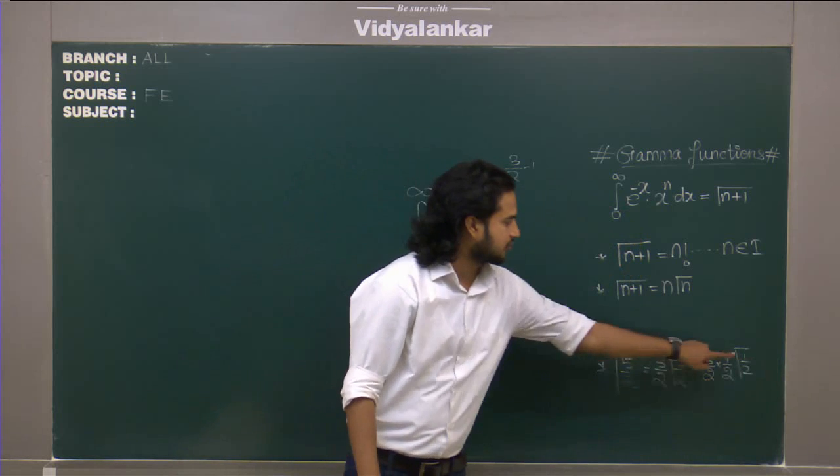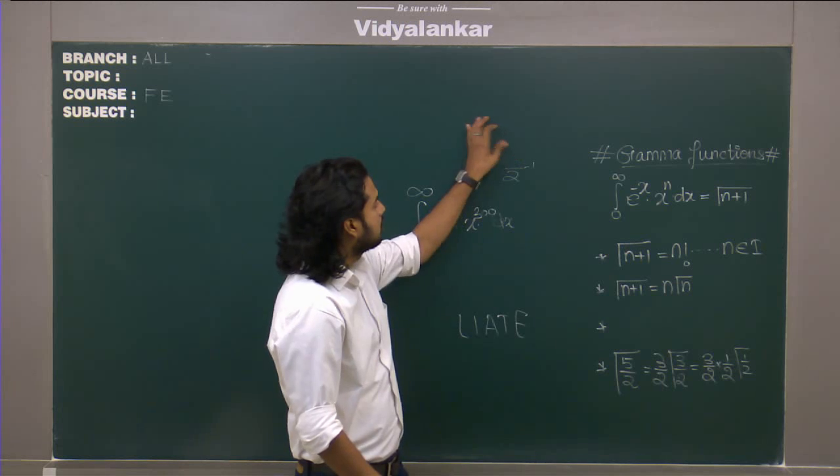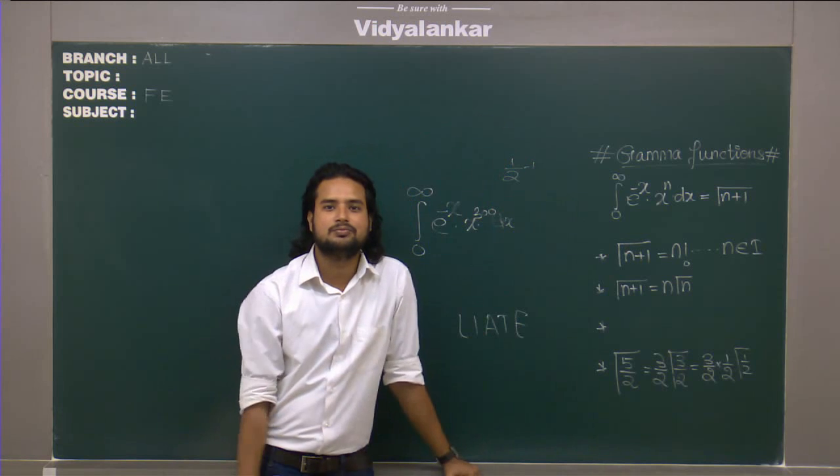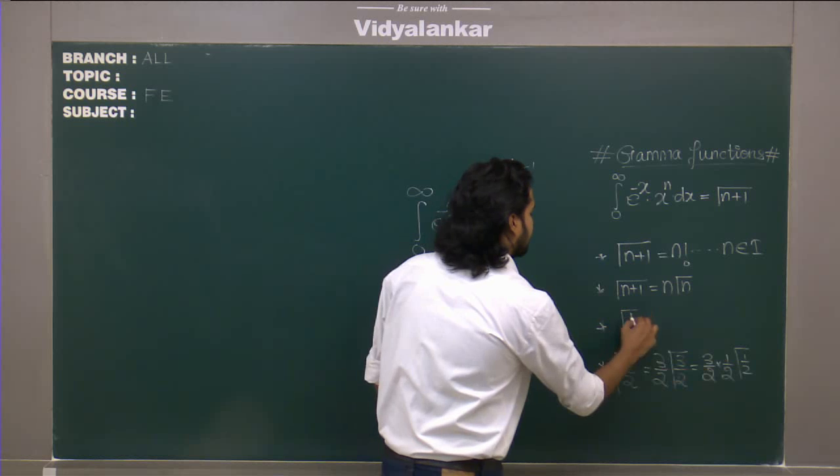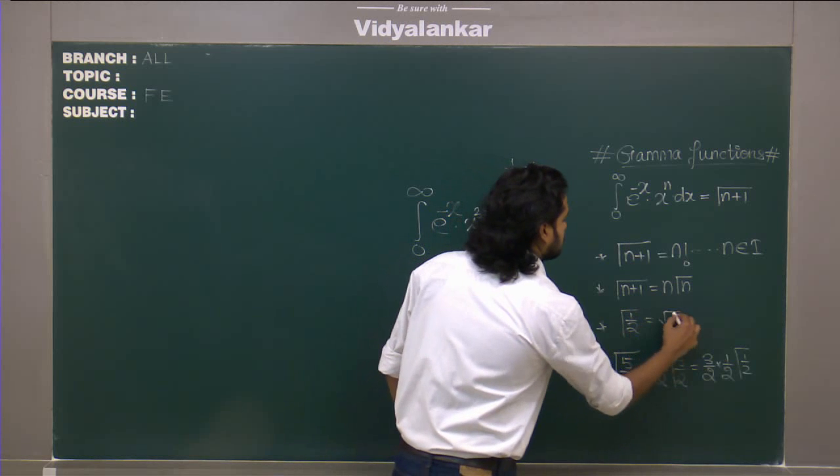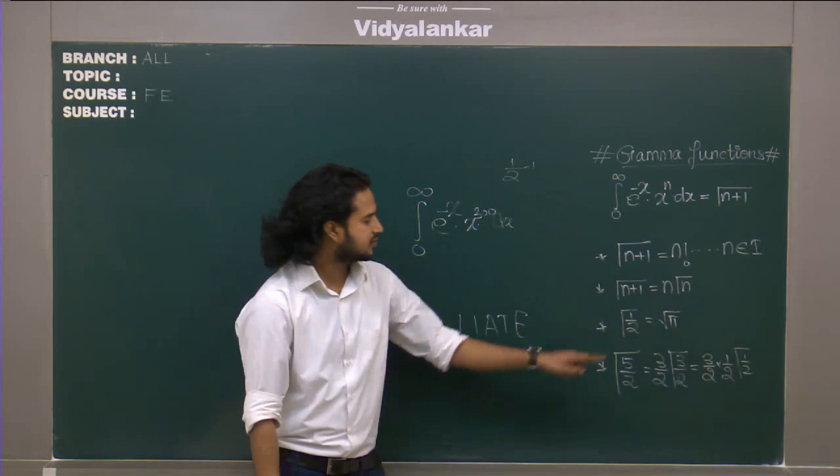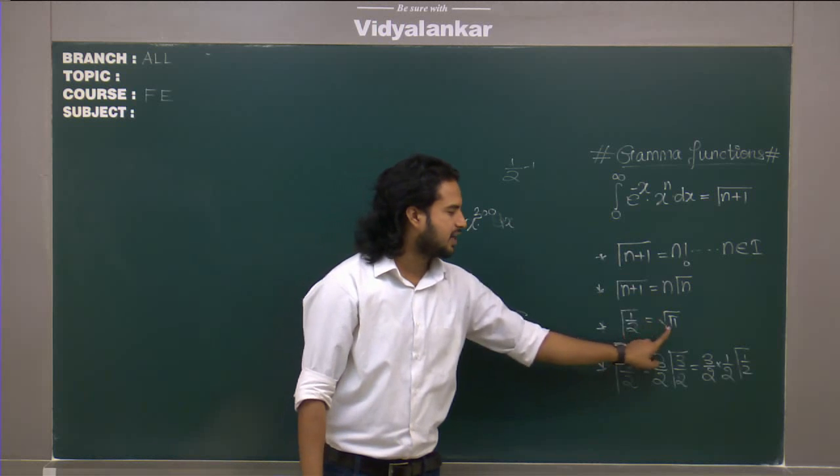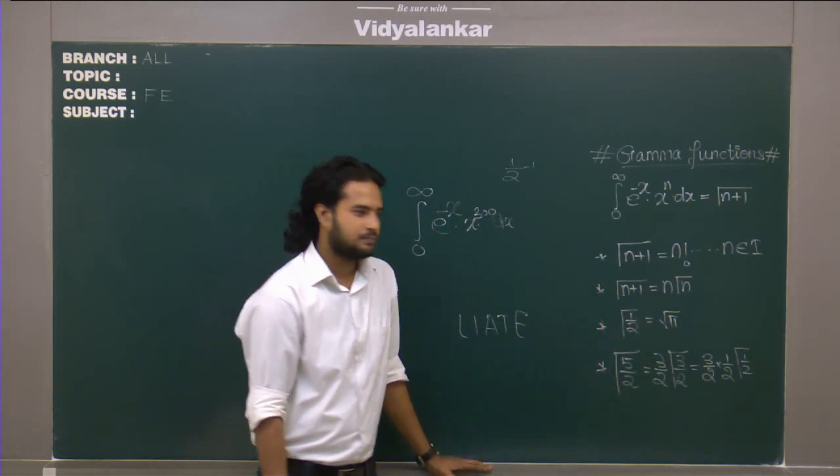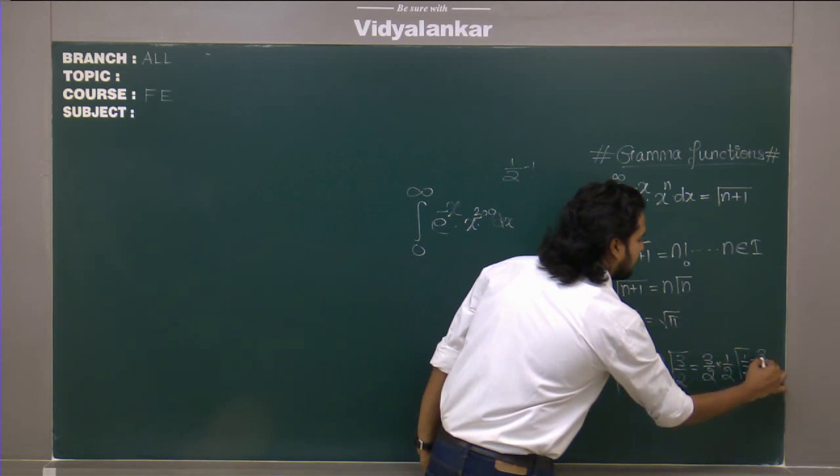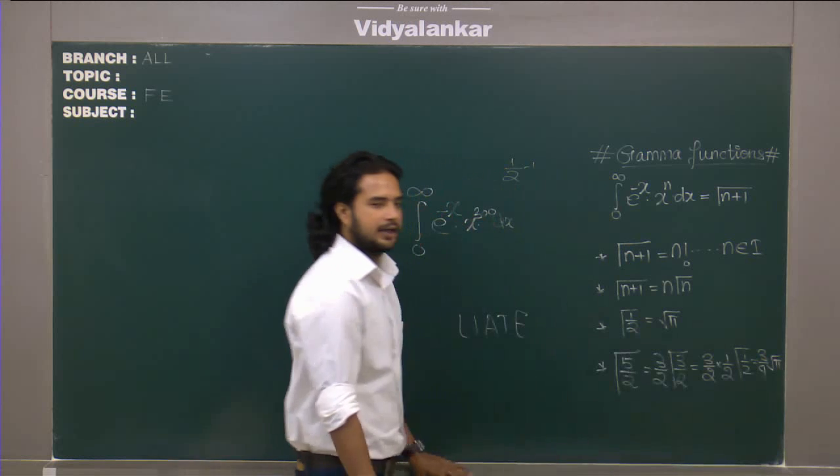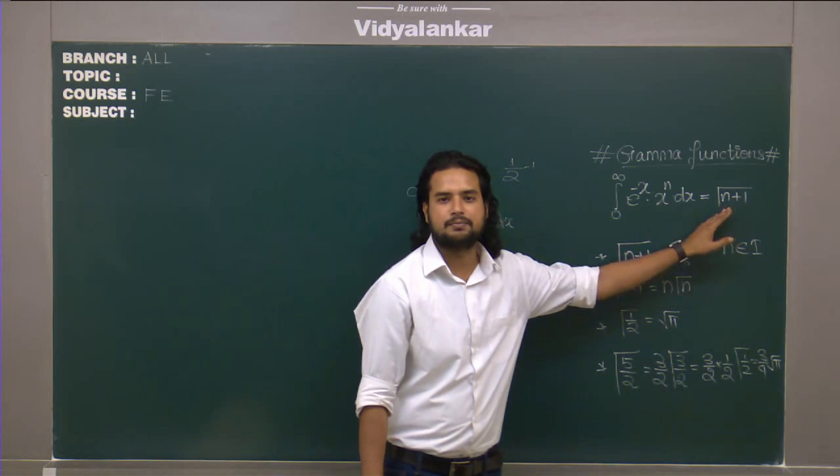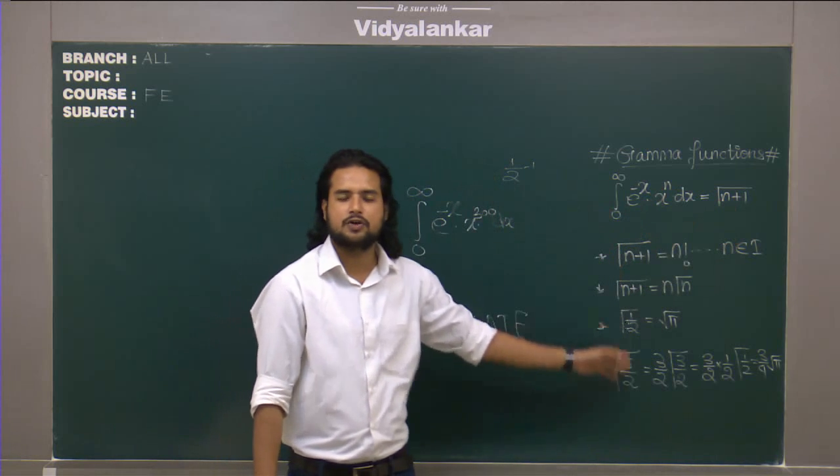Now again if I apply the same process 1 by 2 minus 1 I will get a negative number. So that again is a problem. This gamma 1 by 2 is actually root pi. And that has obviously been obtained from this integration itself. So gamma 1 by 2 whenever we get we will write it as root pi. So this is 3 by 4 root pi. So this is how we evaluate this value. Gamma n plus 1 whatever you have this is how you can calculate.